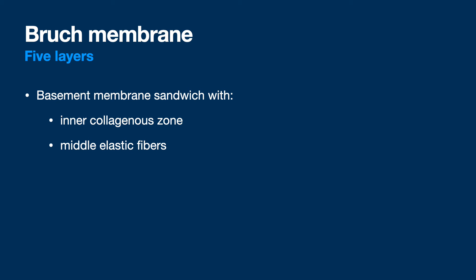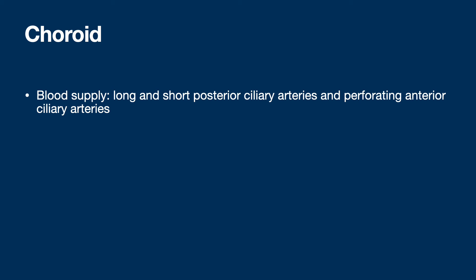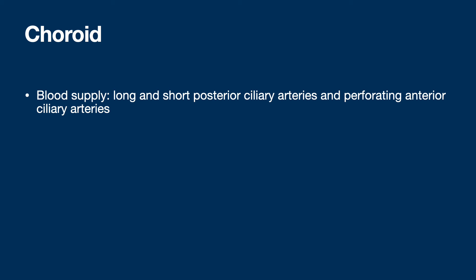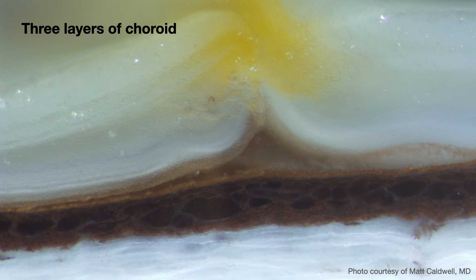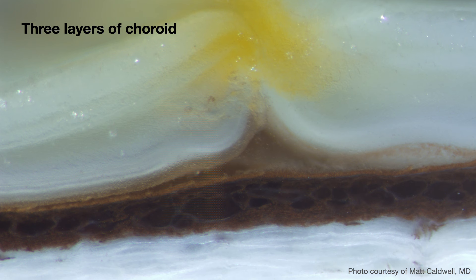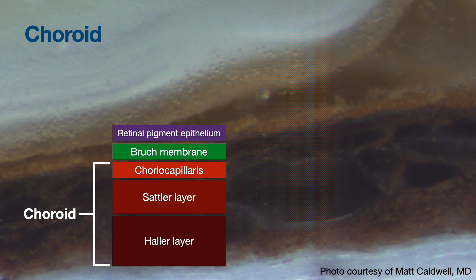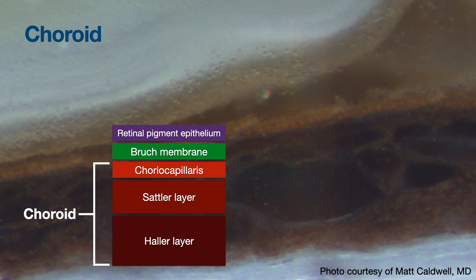Bruch's membrane has five layers: a basement membrane on either side, inner collagenous zone, elastic fibers in the middle, and outer collagenous zone. Problems with pseudoxanthoma elasticum can cause breaks in Bruch's membrane. The choroid gets its blood supply mostly from the short posterior ciliary arteries posteriorly and long posterior ciliary arteries more anteriorly. It's maximally thick posteriorly. Pigmentation depends on the number of melanocytes, affecting laser energy absorption. The three layers of the choroid are the choriocapillaris, Sattler's layer, and Haller's layer. The choriocapillaris is fenestrated; the other two are not. This is important when discussing FA and ICGA.